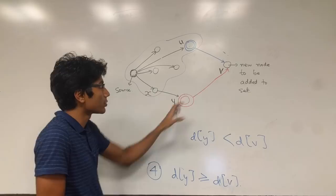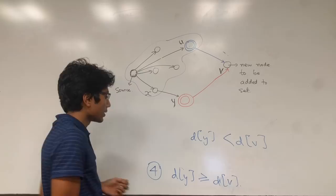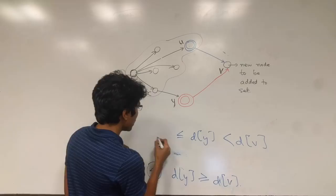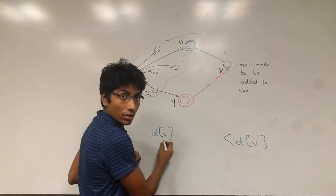And now you see, d of y is actually greater than or equal to d of v. So cancelling out the terms, we have d of v less than d of v. And this cannot happen. It's a contradiction.